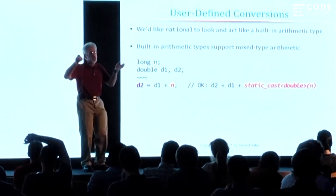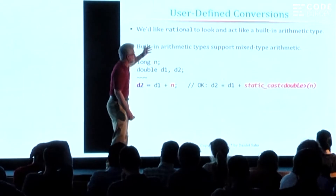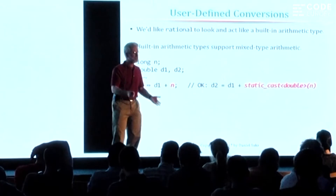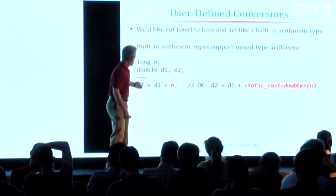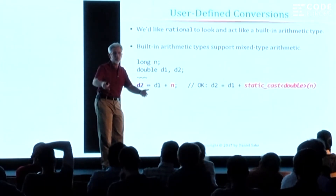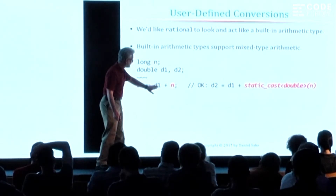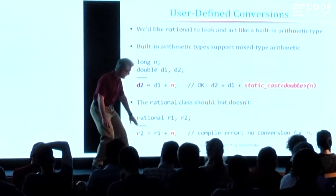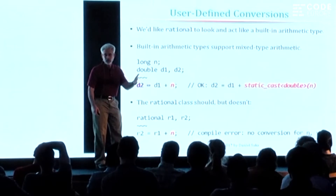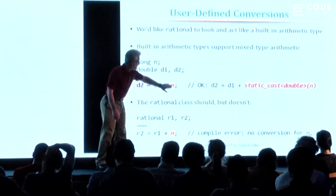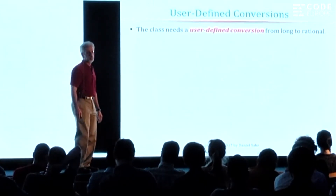The whole point of doing this kind of operator overloading is so that if you and I are working on a project together, I can do all this work to build this class and hand it to you — and if I have made rational numbers look and act like built-in types, then you can just use this like it's a built-in type and your intuition will guide you to use it correctly. So one reasonable expectation is that you should be able to say 'rational plus long', and what should happen is it should turn that n into n over one — a rational number — and add it.